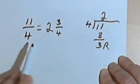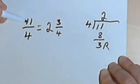Okay? So to change any improper fraction into a mixed number, divide the denominator into the numerator. The bottom number into the top number.